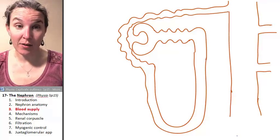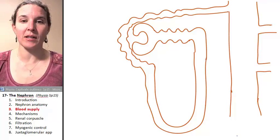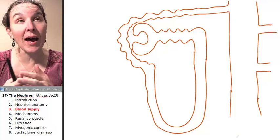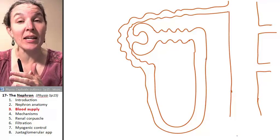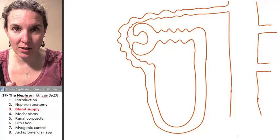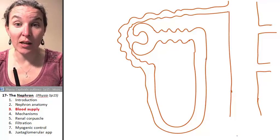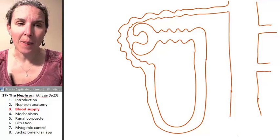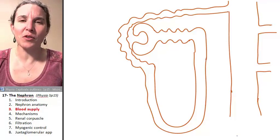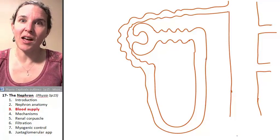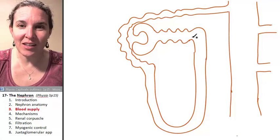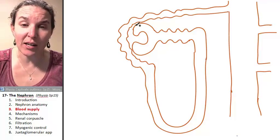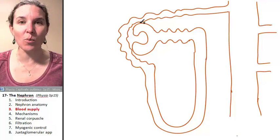We've got to have a blood supply. The whole point of this is to filter the blood. Somehow we're going to have to get intimate connection between our nephron and blood. And ultimately, we're going to move fluid from the blood into the nephron tubule — into this tube right here. That's the whole point.